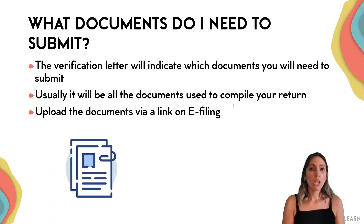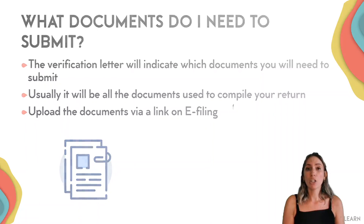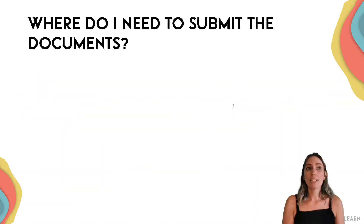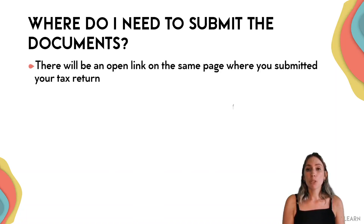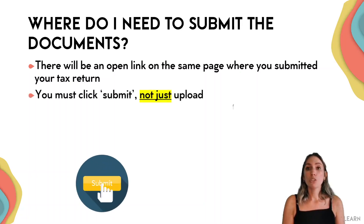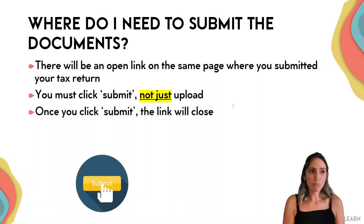Where do you submit these documents? You'll upload them via a link on e-filing. Once you submit your tax return, go to Return History — where you submitted your tax return — and there will be an open link where you upload and submit the documents. It's important to note that once you've uploaded the documents, they haven't gone through to SARS yet. You must actually click the Submit button, as many people make the mistake of thinking they've uploaded it when they haven't.